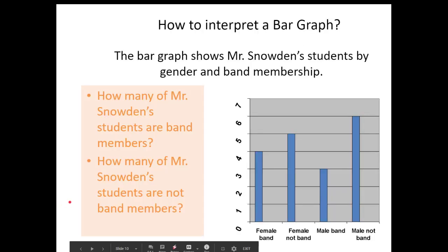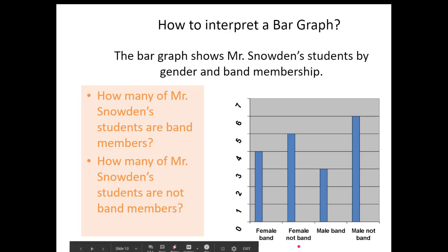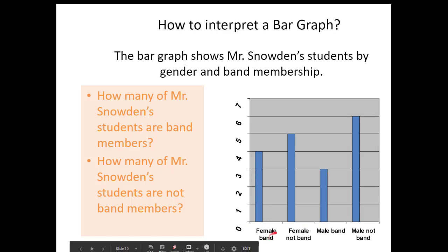Here is another bar graph with categories on the x-axis and counts on the y-axis. It shows Mr. Snowden's students by gender and band membership. There are four girls and three boys in the band — seven band members total. For non-band members, there are five female and six male students, so 11 students not in a band, giving 18 students total. You're either in the band or you're not — there's no in-between; these categories are discrete.